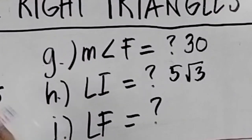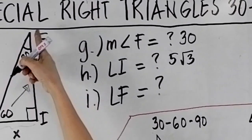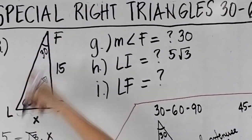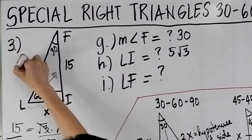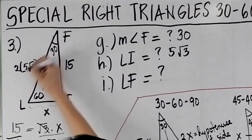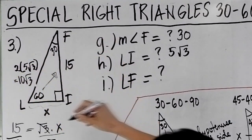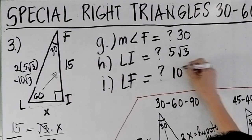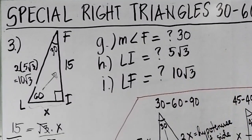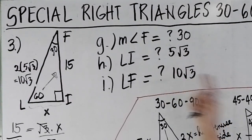What is LF? LF is the hypotenuse, which is 2X. So 2 times 5 square root of 3 gives you 10 square root of 3. So LF is 10 square root of 3.